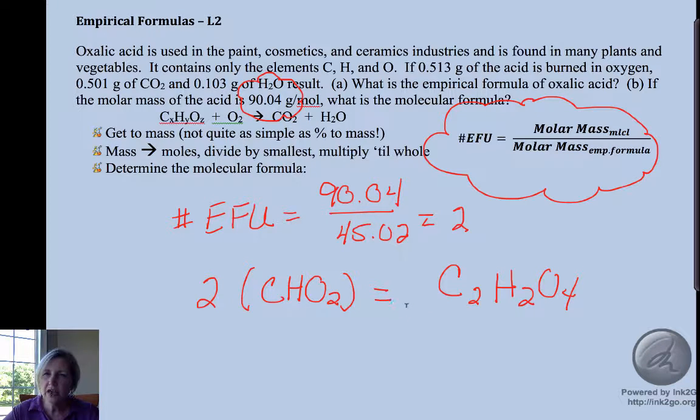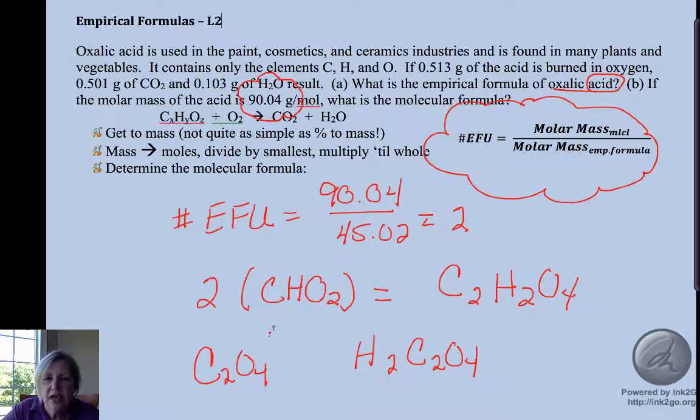That doesn't tell us really much how they're bonded together. It's an acid and that's not very clear from this formula. Oxalic acid is actually H2C2O4, H2C2O4, because C2O4 is the oxalate ion.